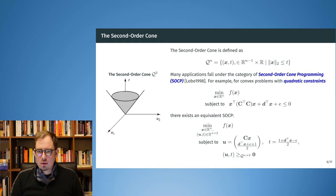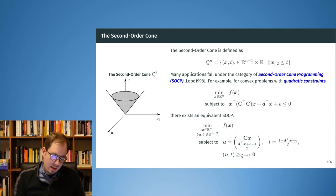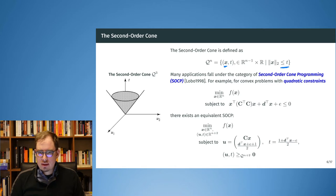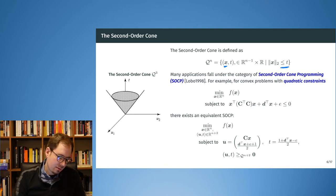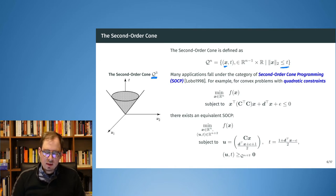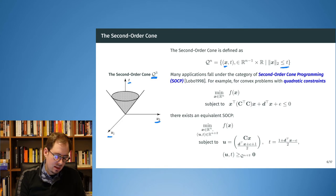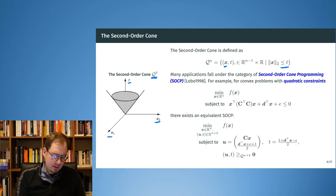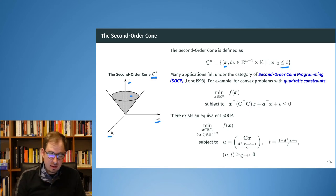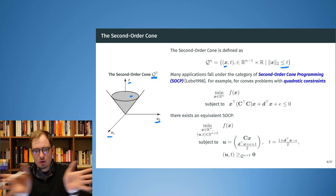The second-order cone is also called the Lorenz cone or the ice cream cone. Given a vector x, it considers all t that are larger than the Euclidean norm of that vector x. In three dimensions, we look at two dimensions for the first entry and t as the last entry. When selecting u1 and u2, t must be larger than the Euclidean distance, and this exactly gives the ice cream cone opening up.